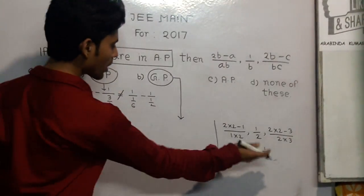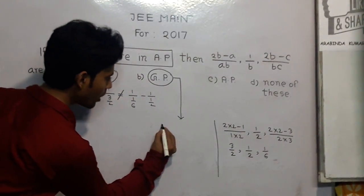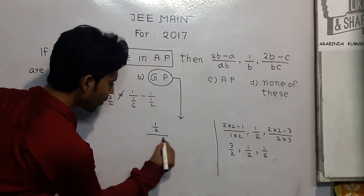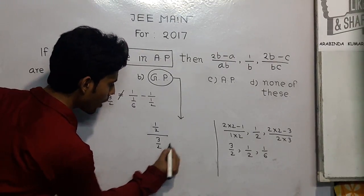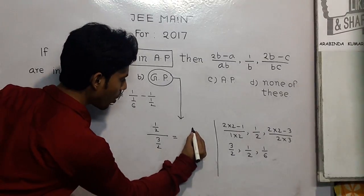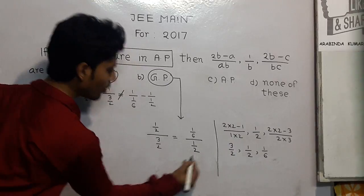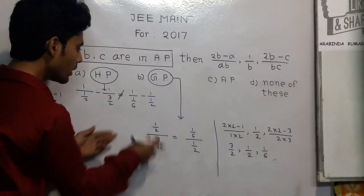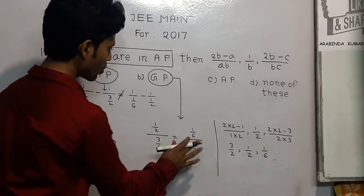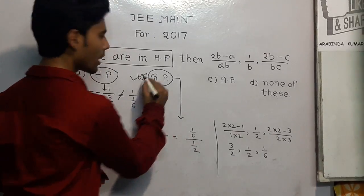If 3 numbers are in GP, then 1 upon 2 upon 3 upon 2 must equal 1 upon 6 upon 1 upon 2. And we see that it is also 1 by 3 and it is also 1 by 3. So option B is correct.